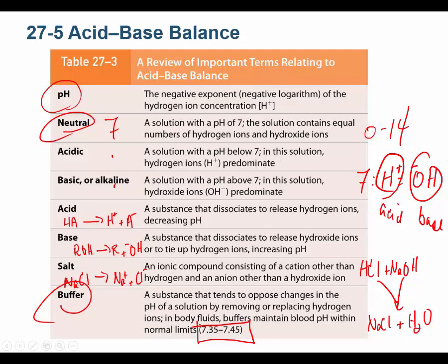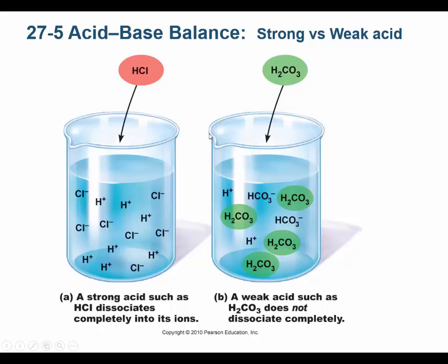Our body buffers keep your pH between 7.35 and 7.45 — please memorize that. There are a whole bunch of lab values I didn't have you memorize, but I want you to memorize our normal pH. A strong acid almost completely dissociates when you put it in solution — hydrochloric acid is a real strong acid that almost completely dissociates into H+ and Cl-. A weaker acid doesn't completely dissociate; some still float around as the acid rather than the proton and the conjugate base.